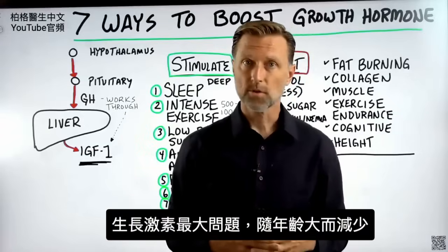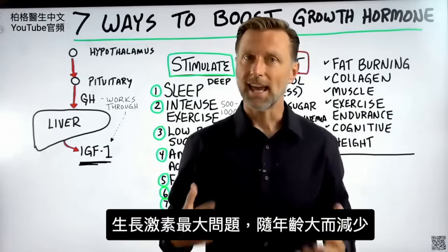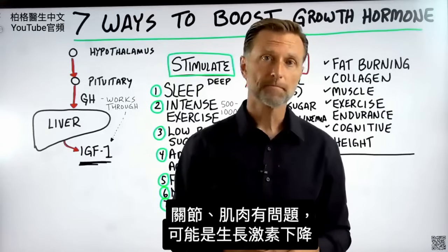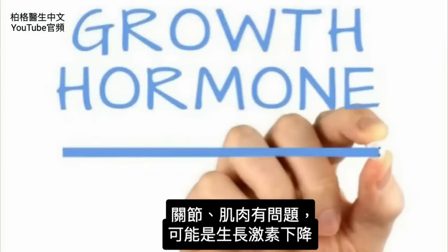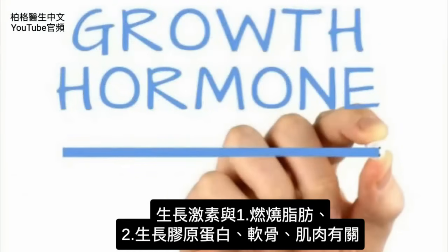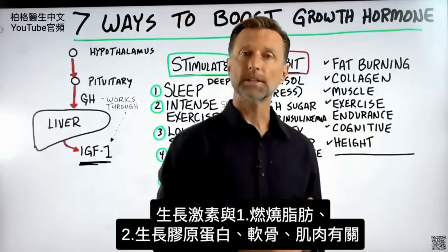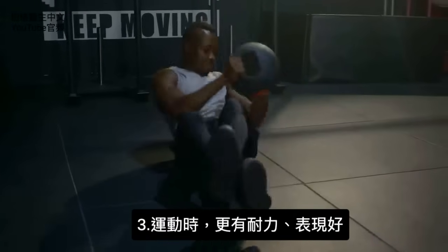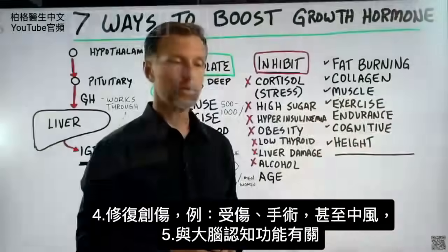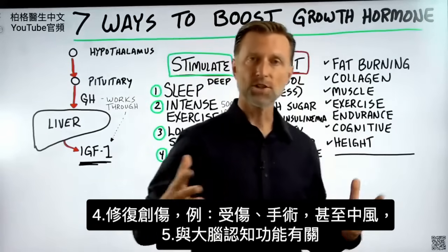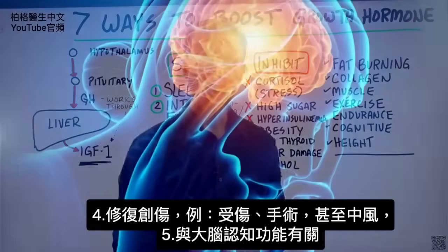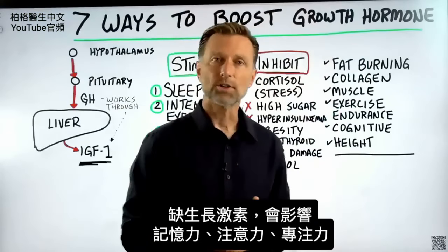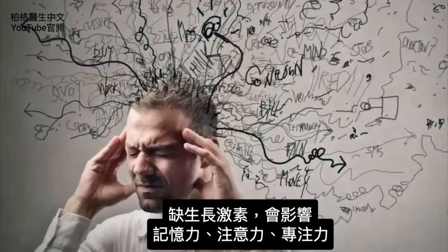The big problem with growth hormone is that it decreases with age. If you're noticing various things with your joints and muscles, it could be the decline in growth hormone. Growth hormone is involved in fat burning, building up collagen, cartilage, and muscle, and it helps your endurance when you exercise — so it's involved in performance. It also helps you recover from trauma like injury, surgery, or even a stroke. It's also involved in the cognitive function of your brain, so if you're low in growth hormone, it may affect your memory, focus, and concentration.